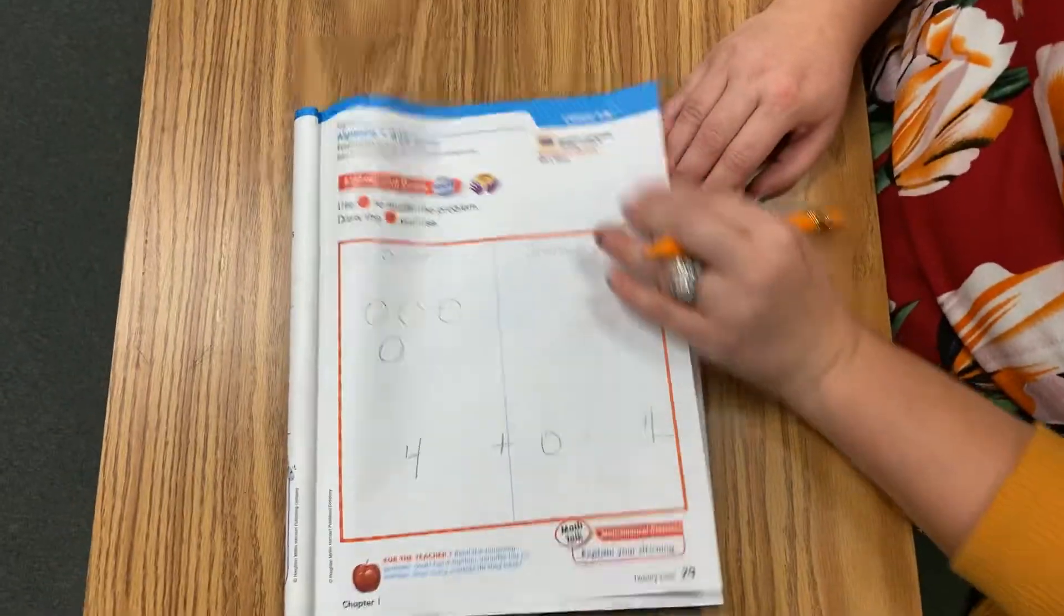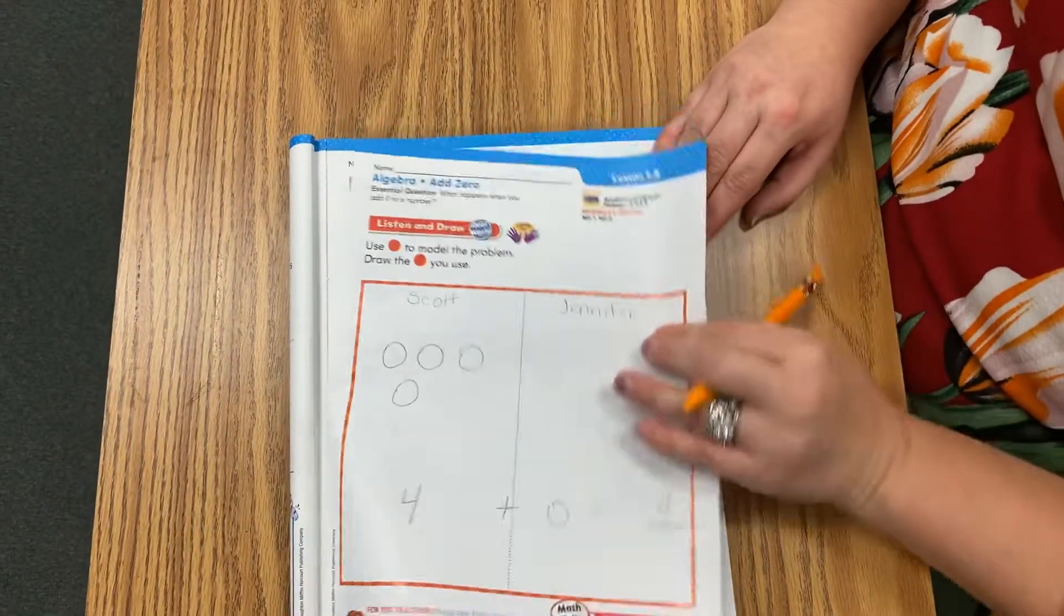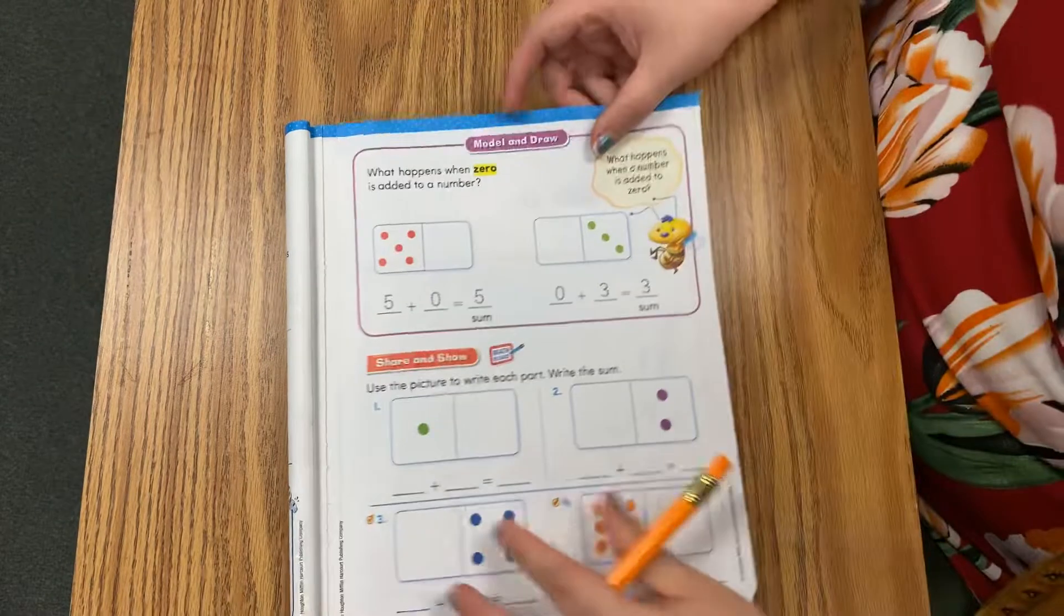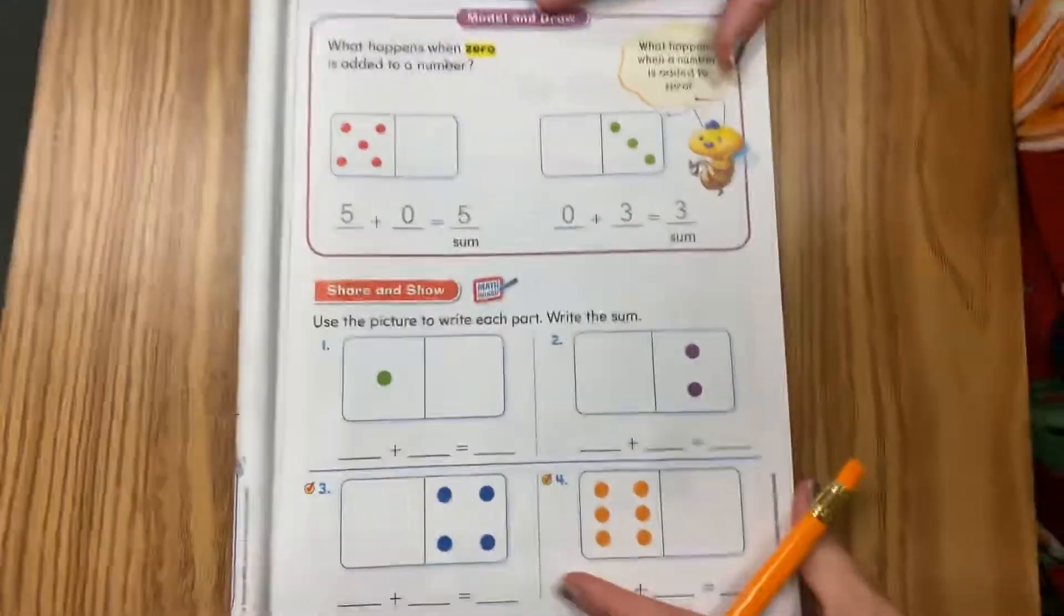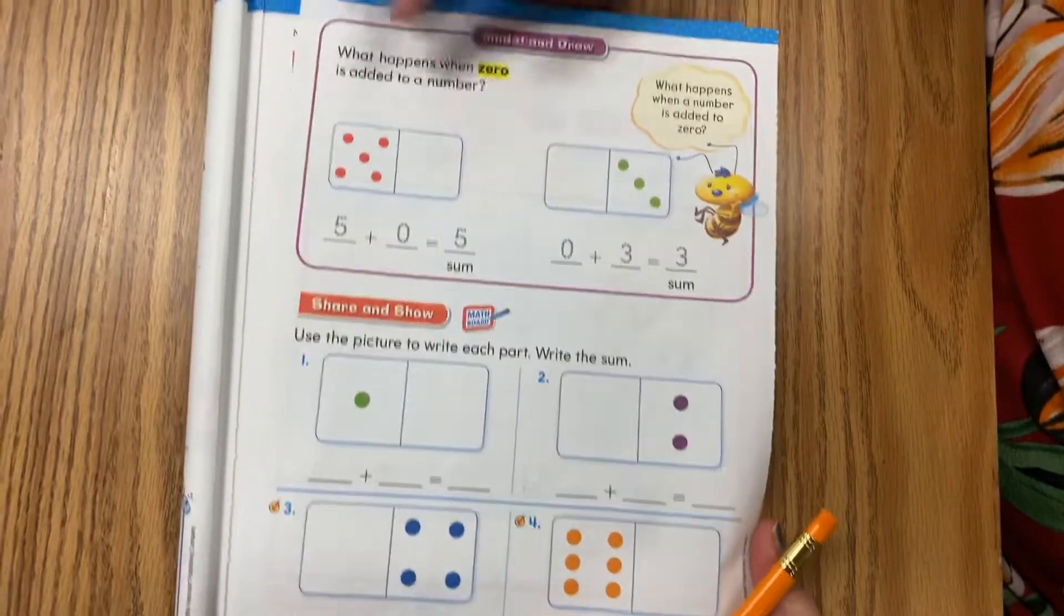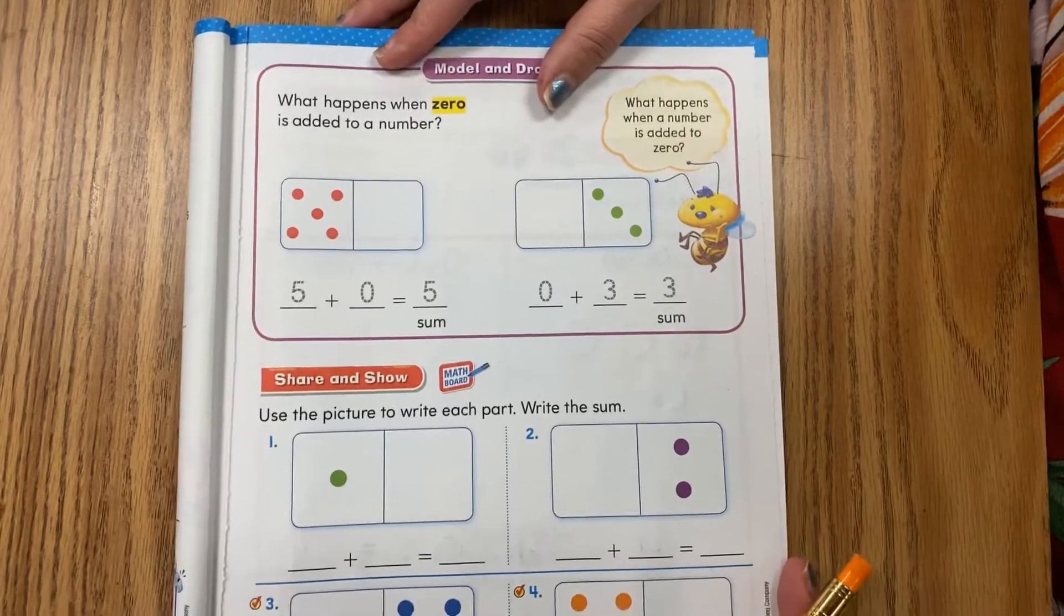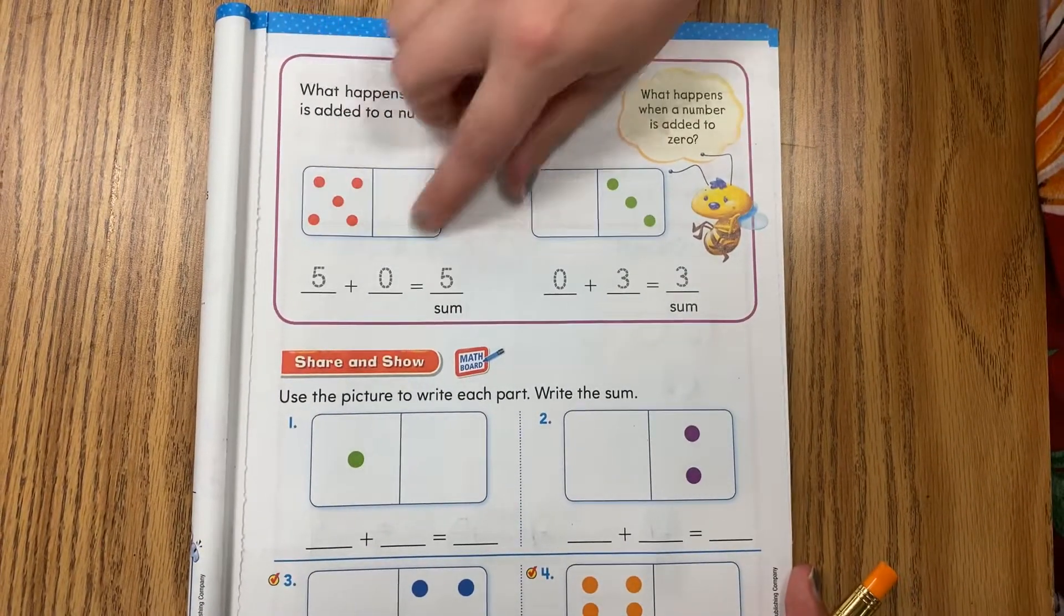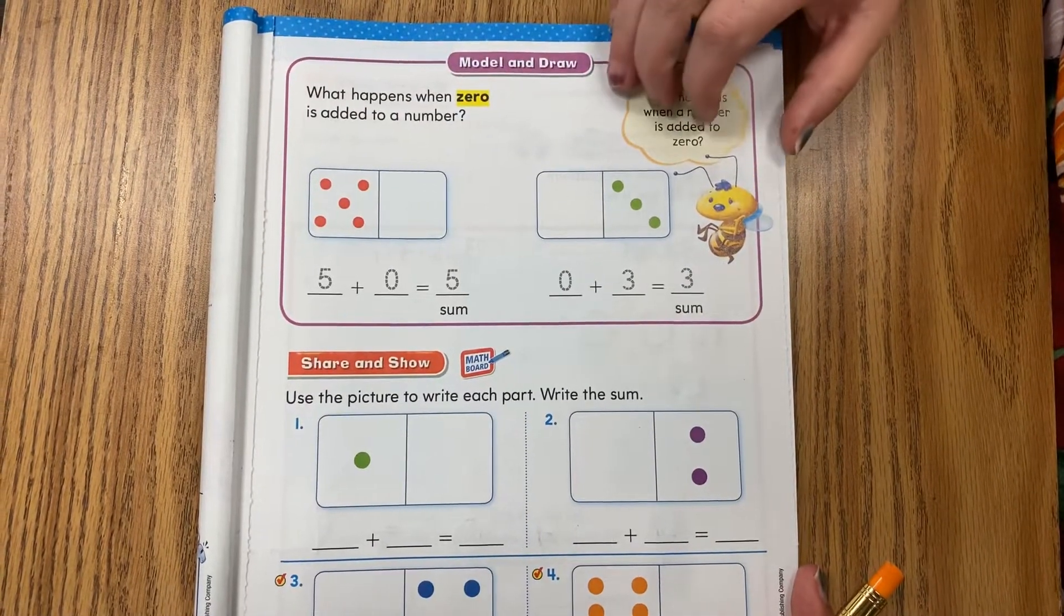Alright guys, I rip, you flip. Here we go. Now we're going to practice this using dominoes. You guys have your purple dominoes, which I'm sure you've seen. But this is going to be using just the zero domino.